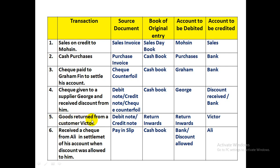Transaction 5: Goods returned from customer Victor. When goods are returned, debit notes and credit notes are the relevant source documents. Because these are sales returns, they are recorded in the returns inward or sales return journal. The accounts are: returns inward debited, and Victor's trade receivable account credited.